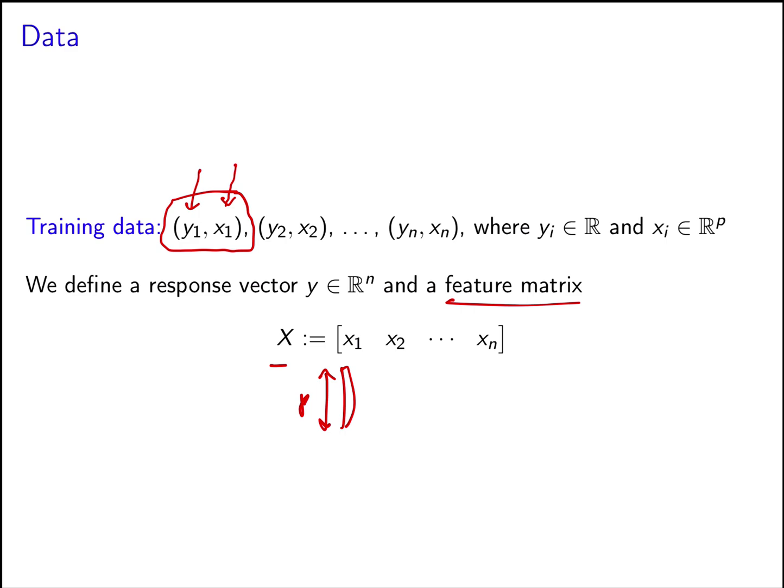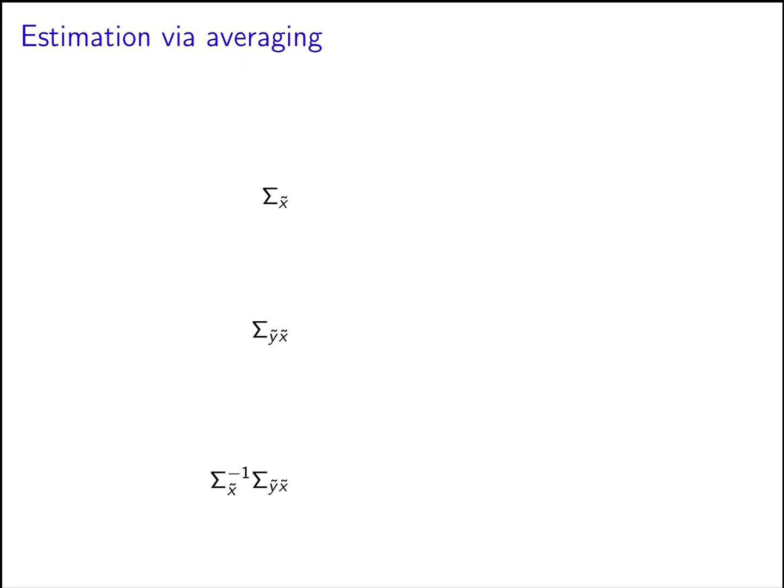The p entries correspond to the p features for each observation, so the first column is the p features in the first example, the second column is the p features in the second example, and so on. Now we need to estimate the quantities that give us the best mean squared estimate. That would be true if we knew the covariance matrix and the cross-covariance matrix, but as we see, they have to be estimated from data.